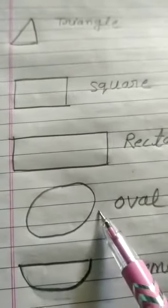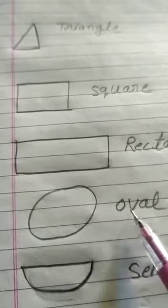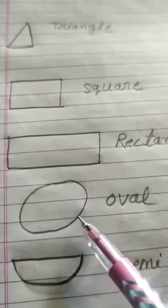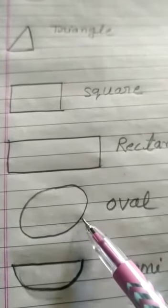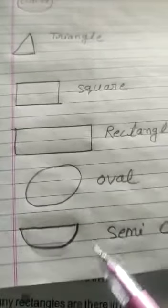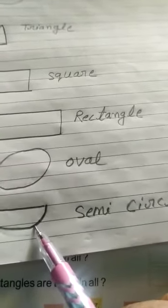This is oval. This is an oval. It has no corner. You have seen X. That is oval. Next, semicircle.